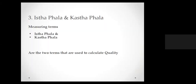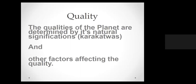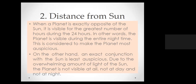Now let's talk about east Phala and Kashta Phala — these are measuring terms used to calculate each planet's beneficial and difficult aspects. Each planet has two types of attributes: east Phala, the beneficial aspects, and Kashta Phala, where one experiences hardships in life. The distance from the sun: at the time of birth, if a planet is opposite to the sun from Earth's perspective, it is more powerful and has a greater impact on our life, particularly during that planet's Dasha period.